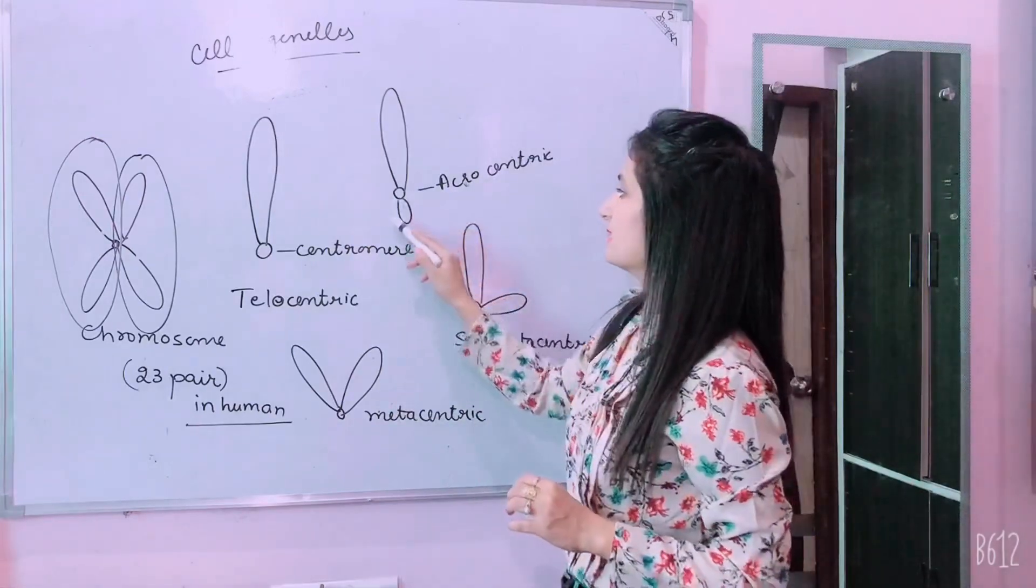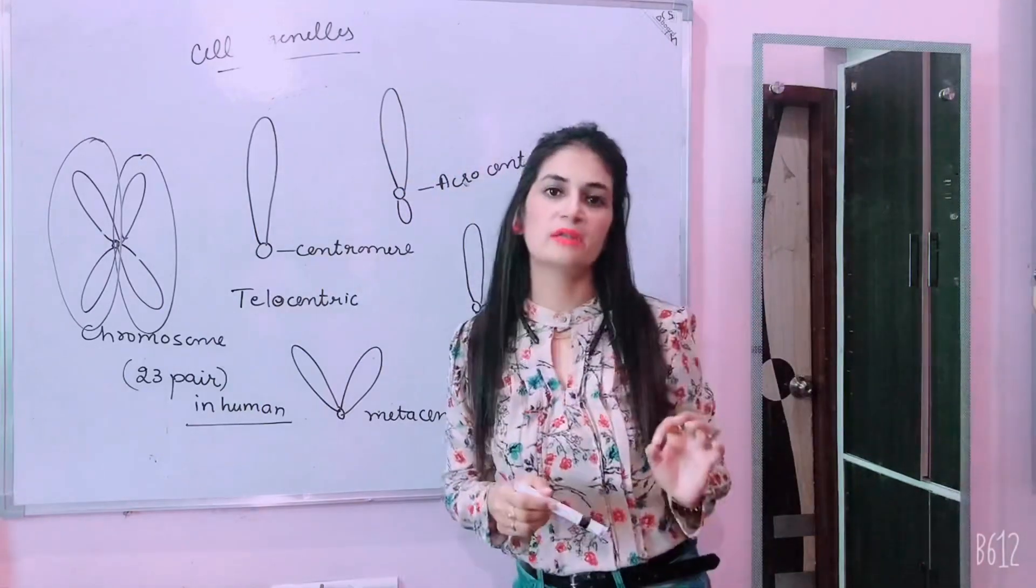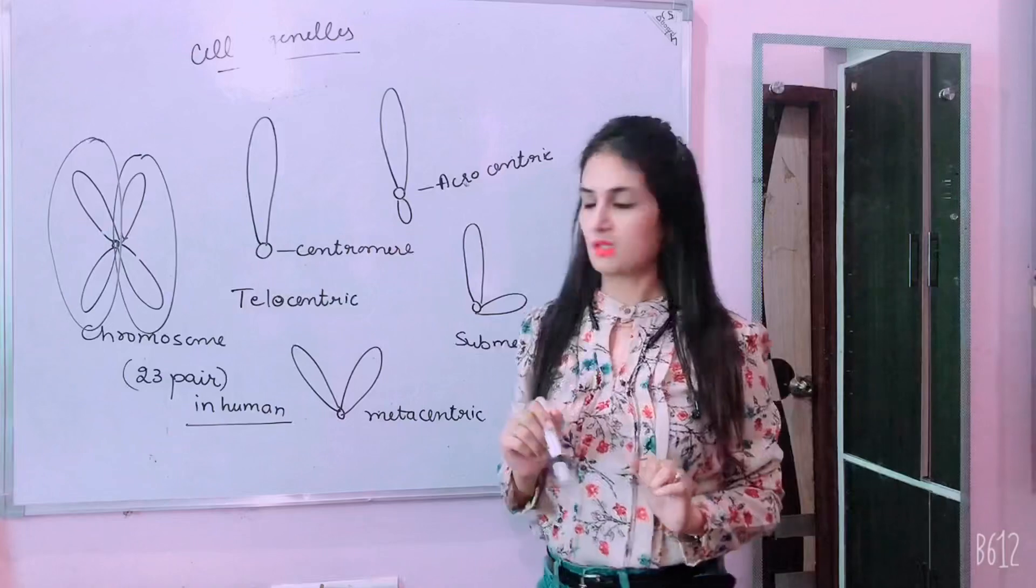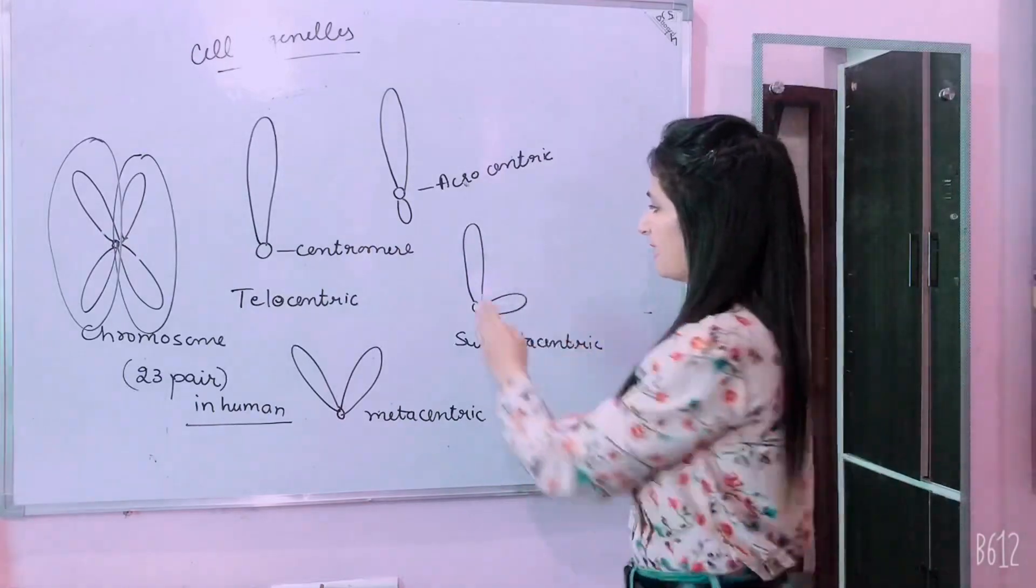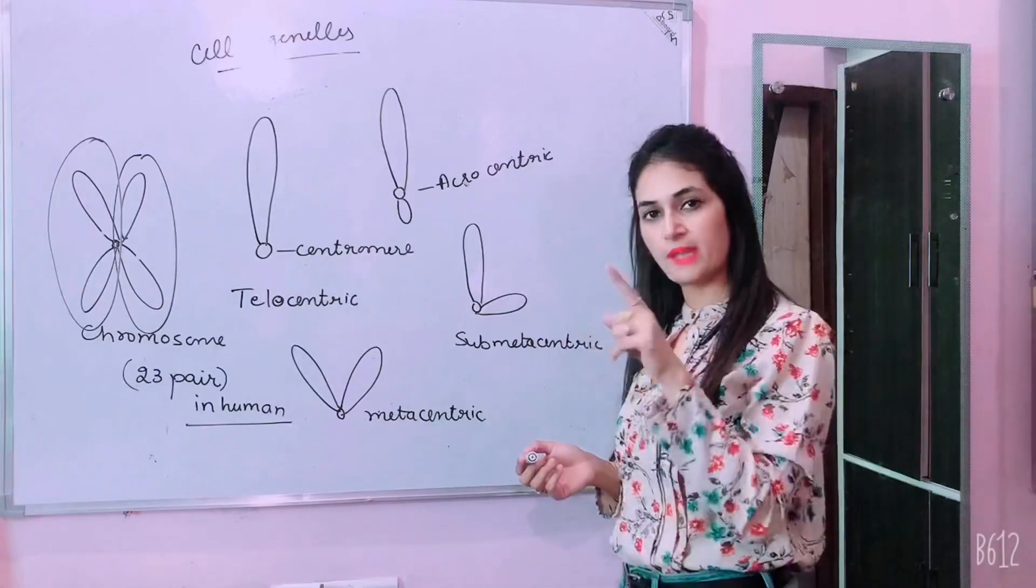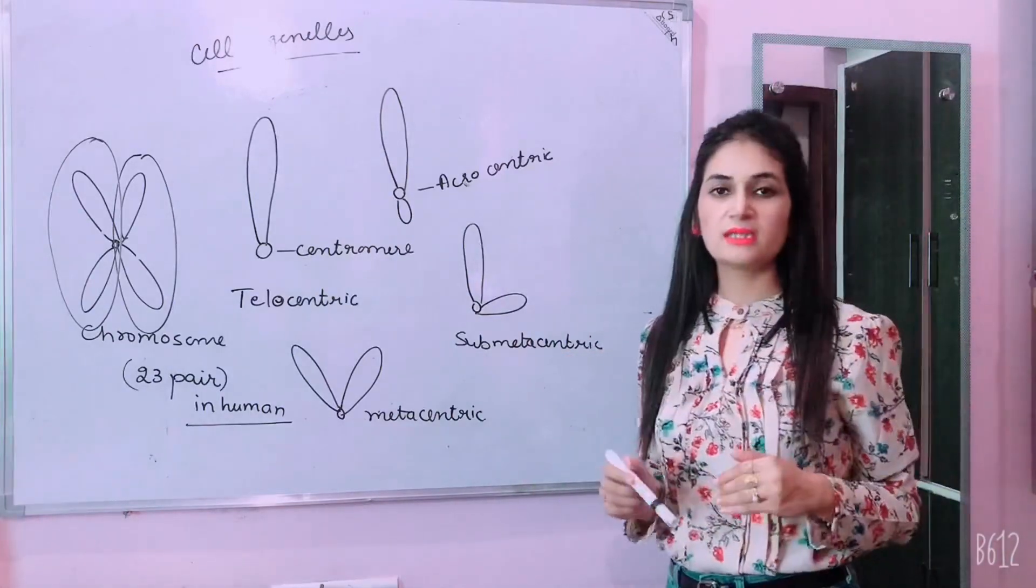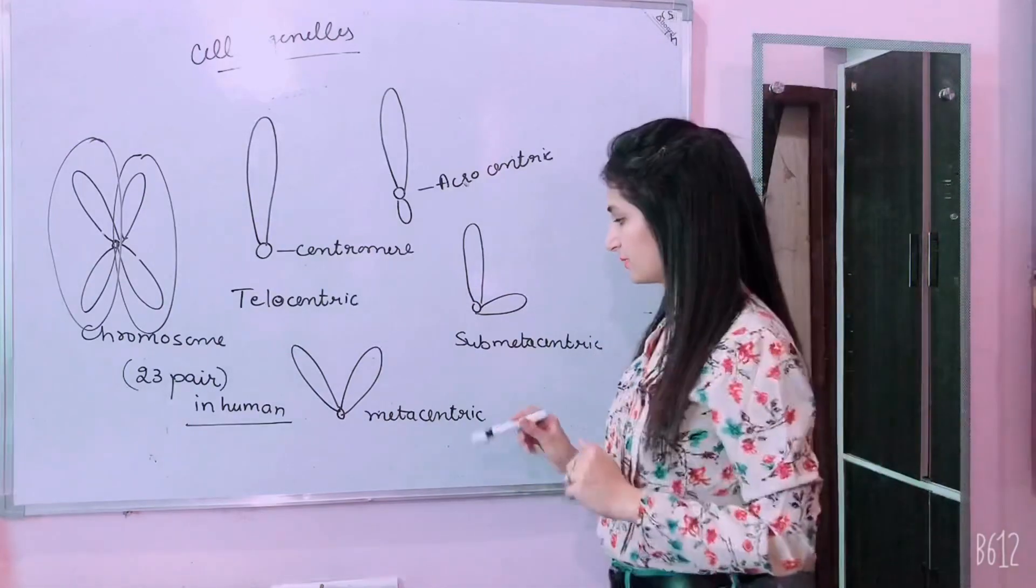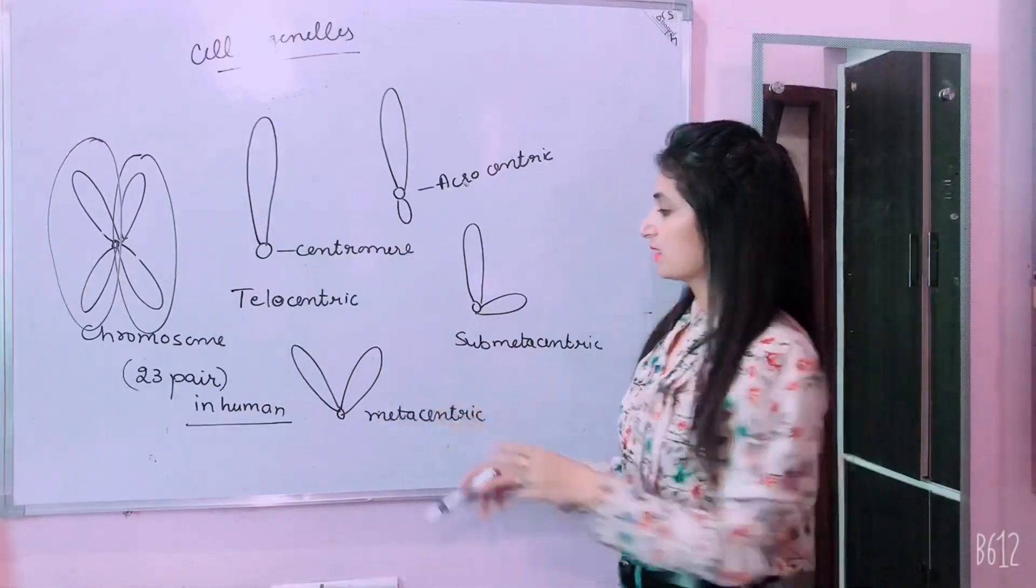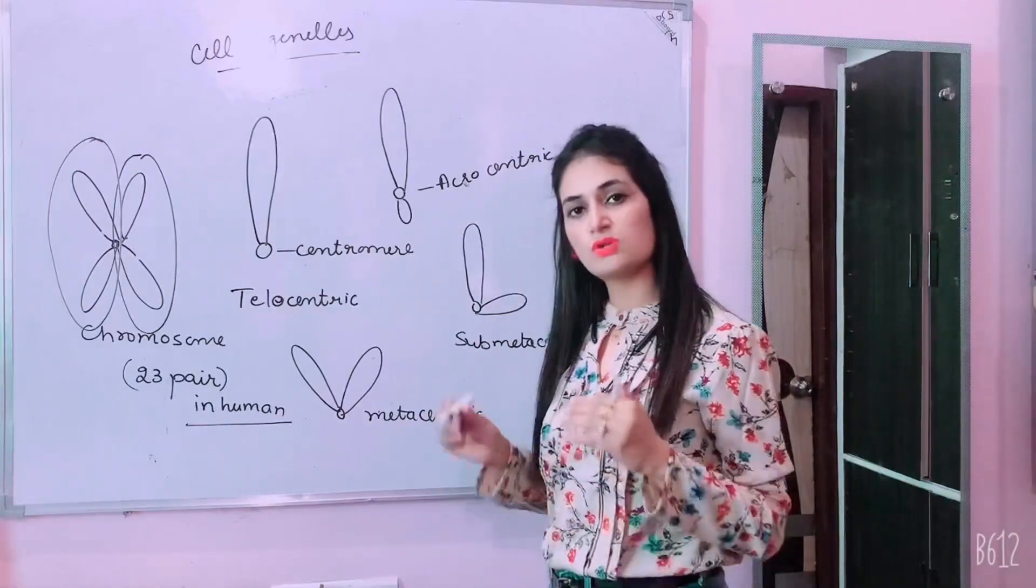The characterized by telocentric, one arm is small and one arm is long, so that chromatid is called acrocentric. Then one arm is long and short but what shape is its L shape, so it is submetacentric. This is submetacentric. Then it is V shape, both arms are same or small, the size is same and it is in shape of V, so it is called metacentric.